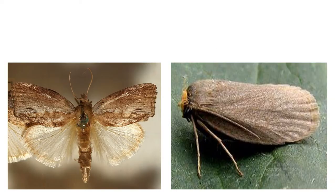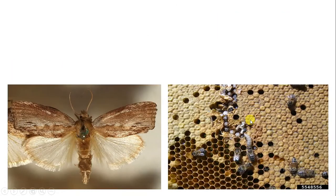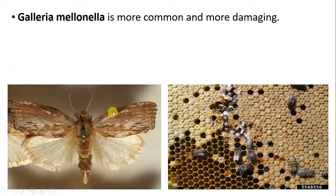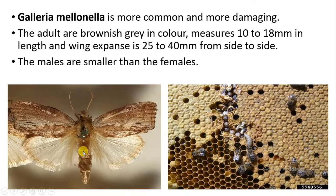The next moths are the greater wax moth and the lesser wax moth. The greater wax moth is Galleria mellonella and the lesser wax moth is Achroia grisella. Galleria mellonella is more common and more damaging. The adult Galleria mellonella is brownish-grey in color and measures about 10 to 18 mm in length, with a wing span of about 25 to 40 mm. The male is smaller than the female in size.